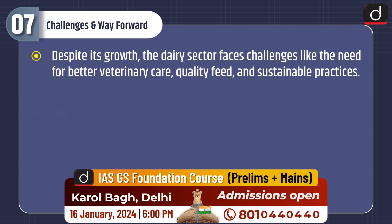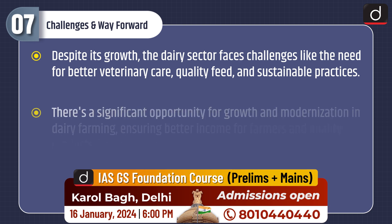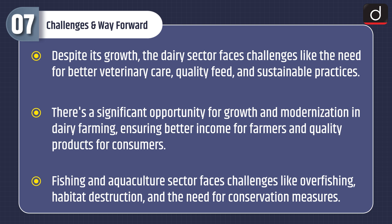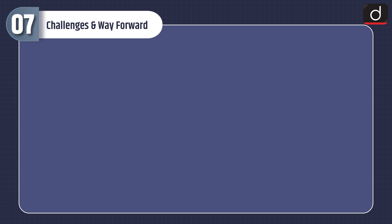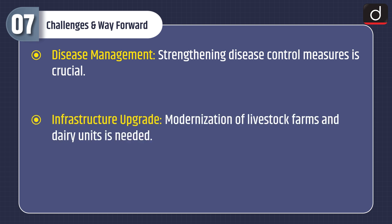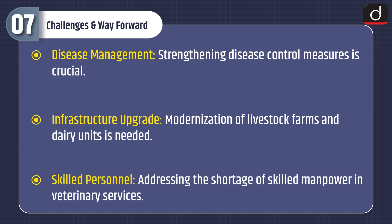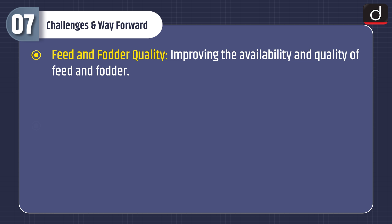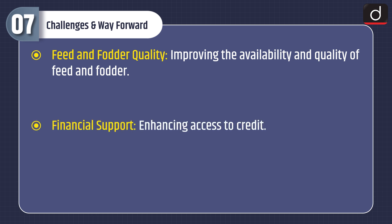Despite its growth, the dairy sector faces challenges like the need for better veterinary care, quality feed, and sustainable practices. There is a significant opportunity for growth and modernization in dairy farming, ensuring better income for farmers and quality products for consumers. The fishing and aquaculture sector faces challenges like overfishing, habitat destruction, and the need for conservation measures. Other key challenges include disease management, infrastructure upgrade and modernization of livestock farms and dairy units, addressing the shortage of skilled manpower in veterinary services, improving the availability and quality of feed and fodder, and enhancing access to credit and financial support.